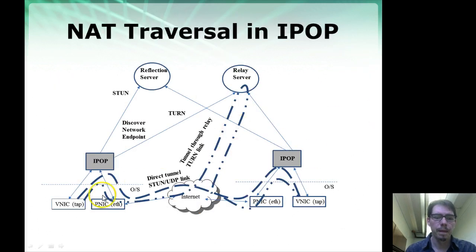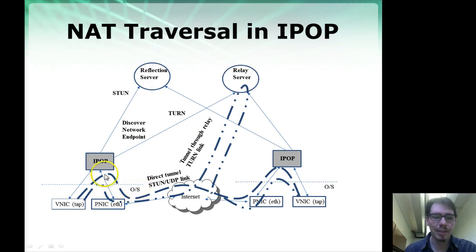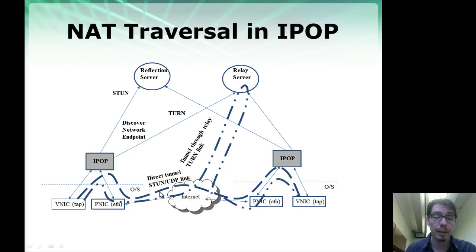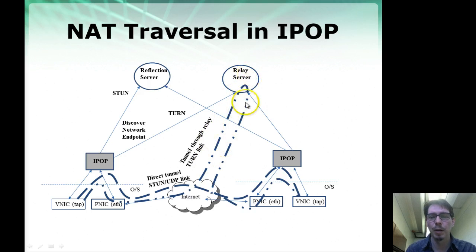For NATs that are well-behaved, knowing that information is enough to create a P2P UDP link using hole punching techniques. If NATs are of the symmetric type, we're going to have to use a third party on the public network to relay messages.